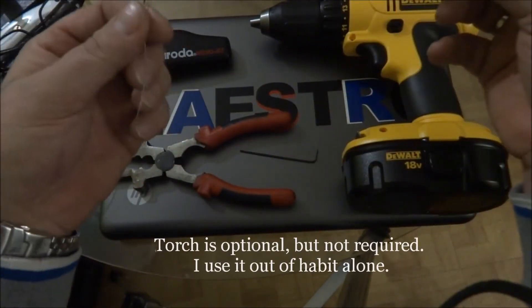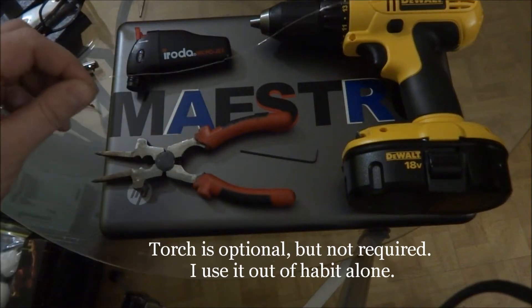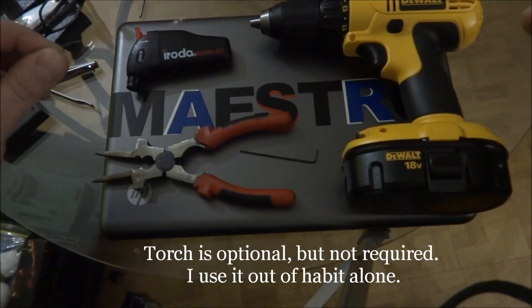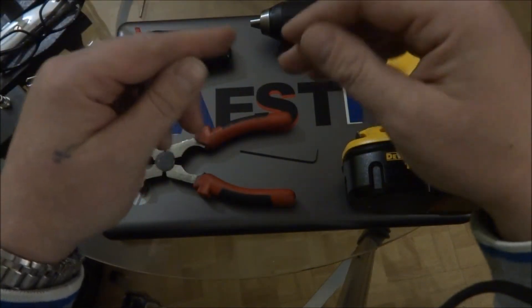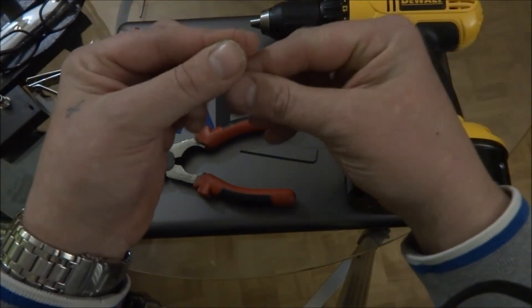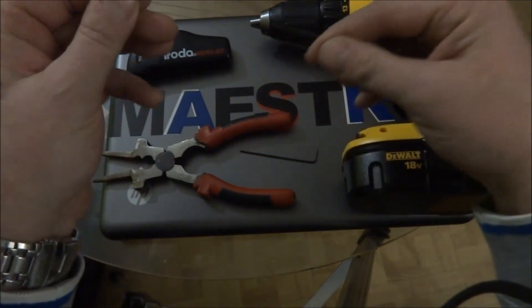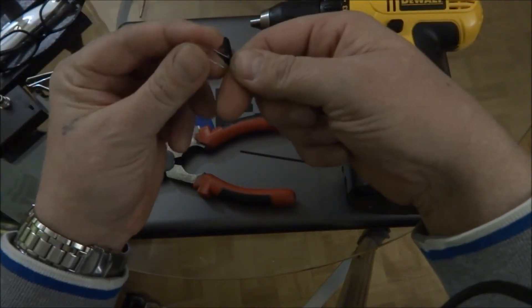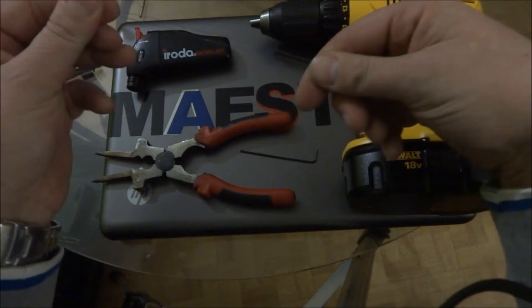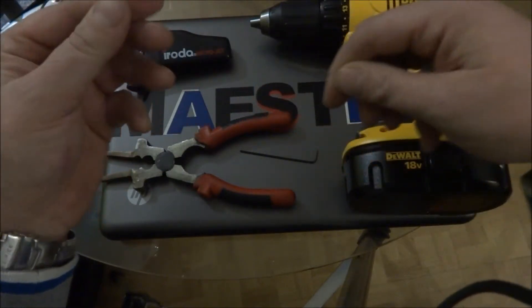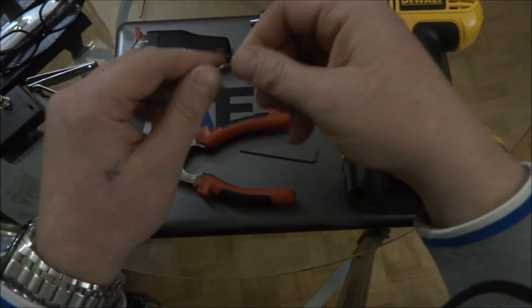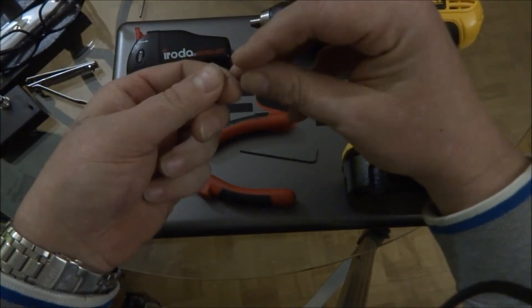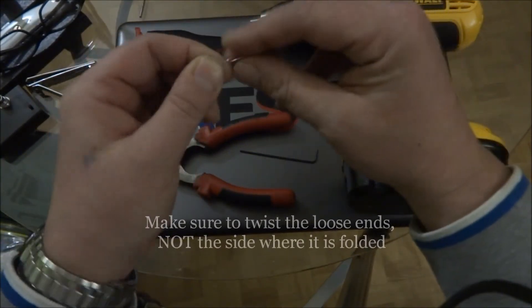What you want to do is take a piece of Kanthal wire. I've got 28 gauge, it's about a foot in length, and I am just going to fold it in half. Once you've got it folded, then what you want to do is twist up the ends on one side, just a little bit to get it started.